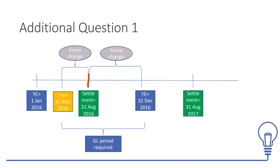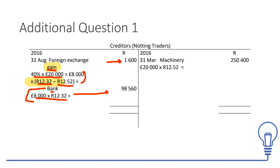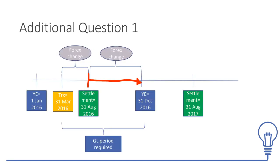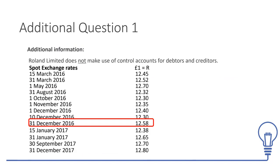We know it's a gain because the creditor is getting smaller — with direct quotations, the rate is getting smaller, so the creditor is getting smaller, which is a good thing and therefore a profit. If this were a debtor, it would work in the opposite way. If these were indirect quotations, it would also work in the opposite way. Now we move towards year end. What amount is left? We started with 20,000 pounds, took out 8,000, so 12,000 pounds remains. We now remeasure that 12,000 at the year-end rate.